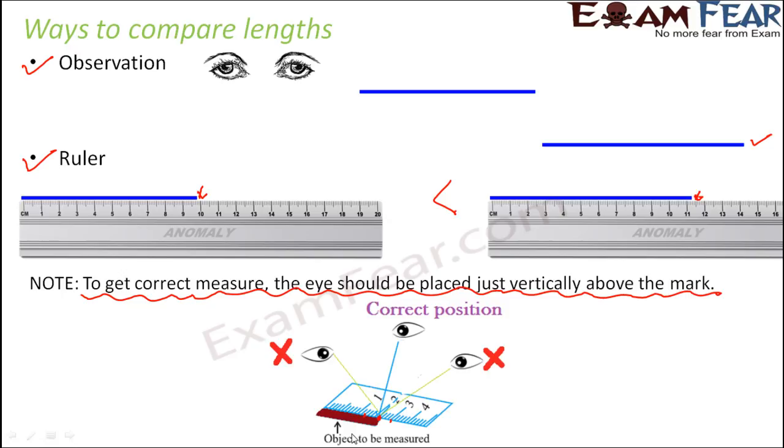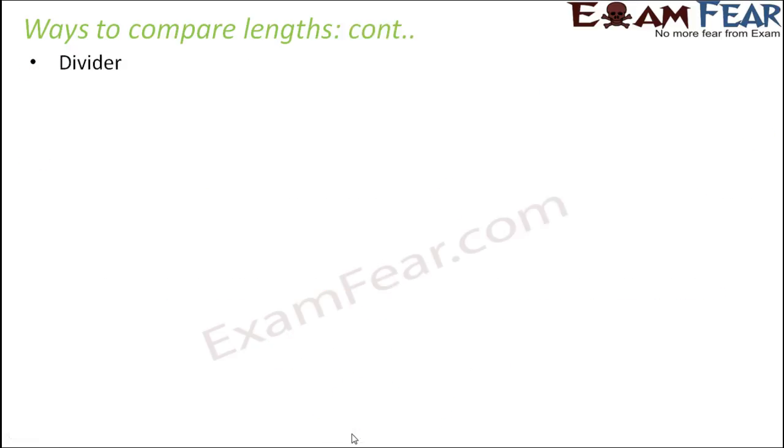So this is one problem that could arise while taking readings with a ruler. However, this can be avoided if you place your eye exactly above the mark. But do you think that there is any other option of using something else other than the ruler? Yes, there is. You can even compare lengths using a divider.